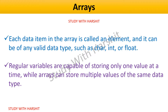Regular variables are capable of storing only one value at a time, while arrays can store multiple values of the same data type. Arrays provide a convenient way to store and manipulate multiple values, making it easier and more efficient to work with large sets of data in C programming.